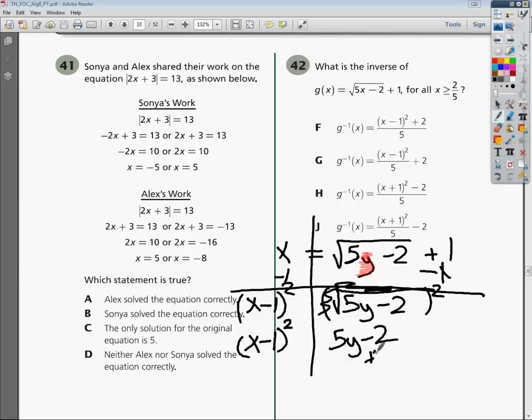It's not squared. So, I'm dealing with a situation where I have (x - 1)² plus 2 equals 5y.